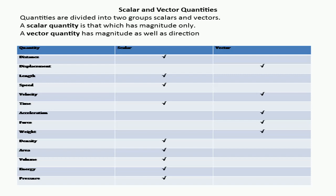The next one is velocity. Velocity is a vector quantity; for measuring velocity we need direction. Next is time. Time is a scalar quantity. Acceleration is a vector quantity. Force is a very important quantity in physics, and force is a vector quantity. Weight is also a type of force, and it is also a vector quantity.